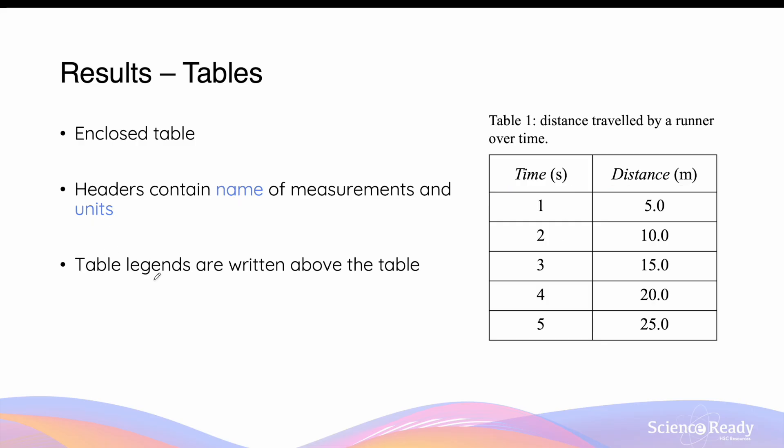The table legend, that is a description of the table information, should be written above the table. While it should be concise, it should be informative enough for the reader to understand the context of your numbers without reading through other parts of your results. So here, I have table 1, distance travelled by a runner over time, which is here, you can see 5 seconds.